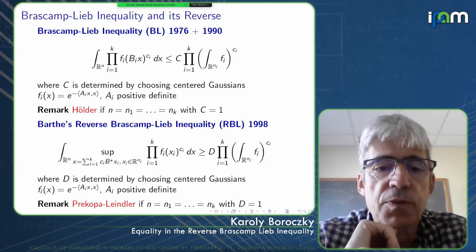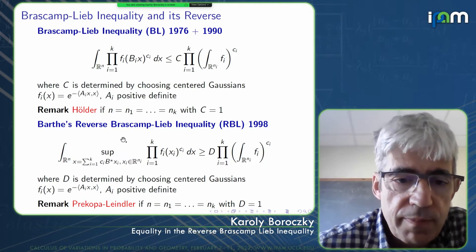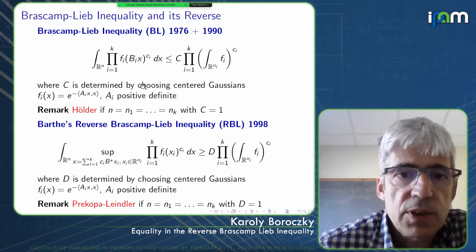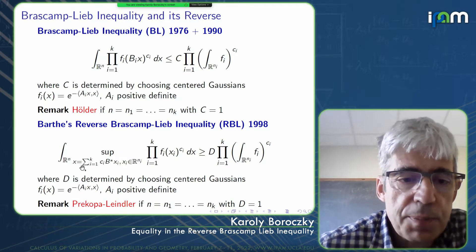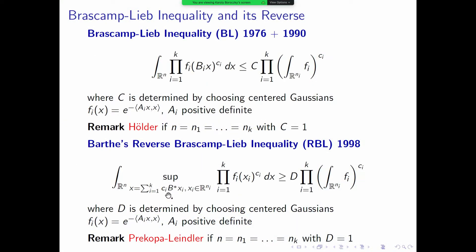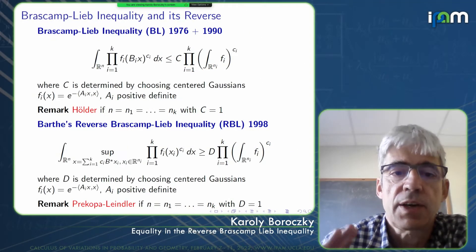Frank Barthe proved a reverse form of the Brascamp-Lieb inequality: instead of simply taking the product for each x, for each x one represents x as a linear combination with coefficients c_i of B_i^* x_i for x_i in R^{n_i}, takes a similar type of product, and obtains a reverse inequality. Again the optimal constant can be calculated using only centered Gaussians. When all dimensions are n, one recovers the Prékopa-Leindler inequality with the constant D equal to one.